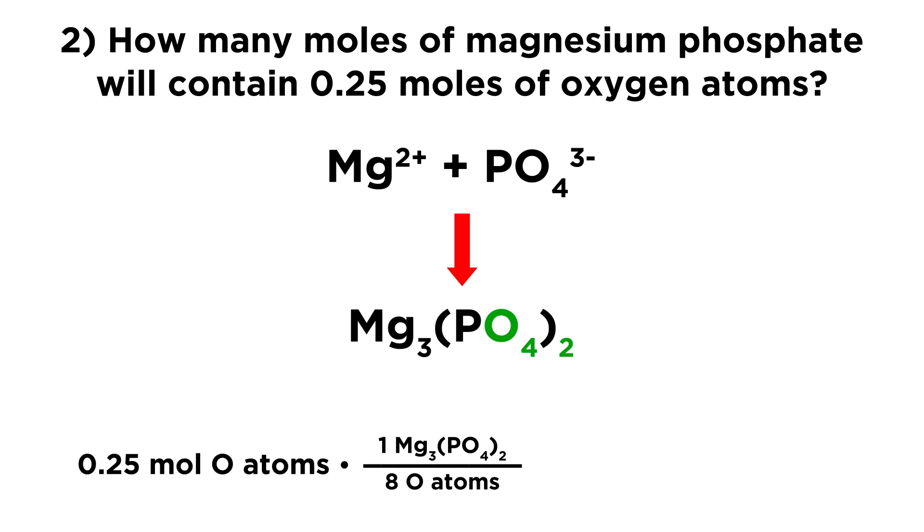And so what we need to do is we need to multiply that by 1 formula unit of magnesium phosphate over 8 oxygen atoms, right? Because each phosphate ion has 4 oxygen atoms, and there are 2 phosphate ions per formula unit. So that is 8 oxygen atoms per formula unit. And that means that 0.031 moles of magnesium phosphate will contain 0.25 moles of oxygen atoms.